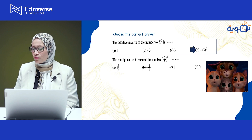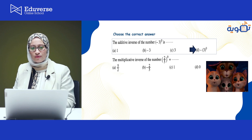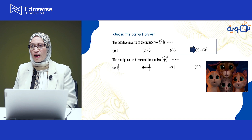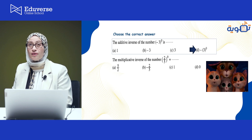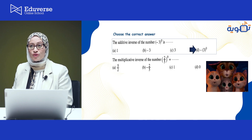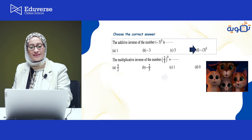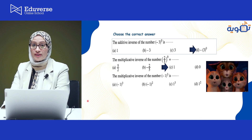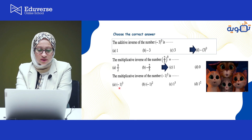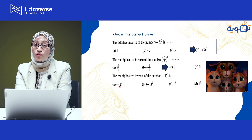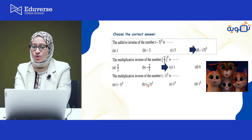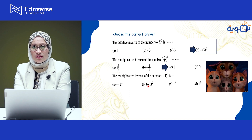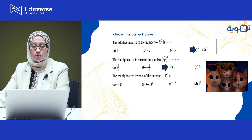This time it's the multiplicative inverse — meaning flipping the fraction. We have (2/5)⁰ which equals 1. The multiplicative inverse of 1 is 1, so immediately the answer is C. Next: the multiplicative inverse of (−1)³. Since (−1)³ = −1, and the multiplicative inverse of −1 is also −1, I look at the choices: (−1)³ = −1 ✓, (−1)² = 1 ✗, 1³ = 1 ✗, 1² = 1 ✗. So the right answer is A: (−1)³.